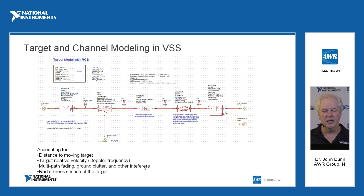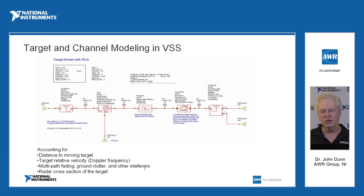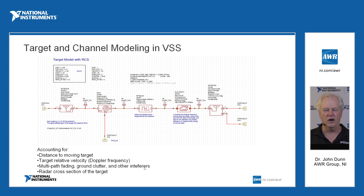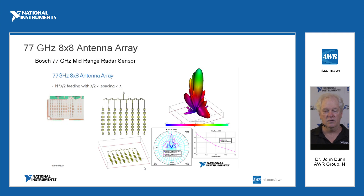This example right here is for a radar system. These elements have things in there like multipath that you can model. You would be modeling the delay, the radar cross section, etc. From this you can start looking at the various radar issues going on.